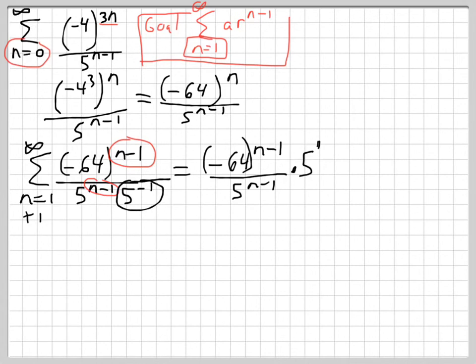So now what is our ratio? Our ratio is negative 64 fifths to the n minus 1 times our 5. And we now have our index matched up which would be n equals 1 to infinity.